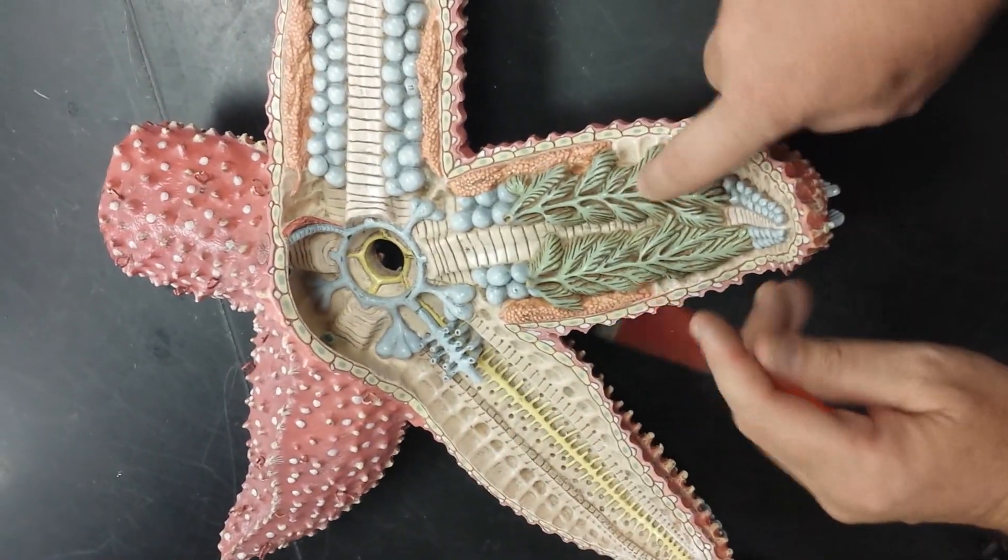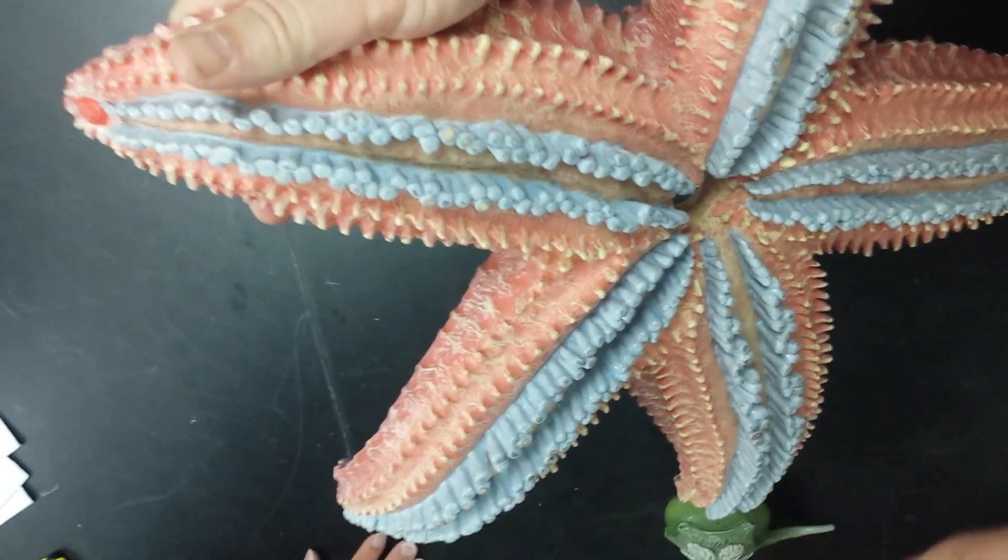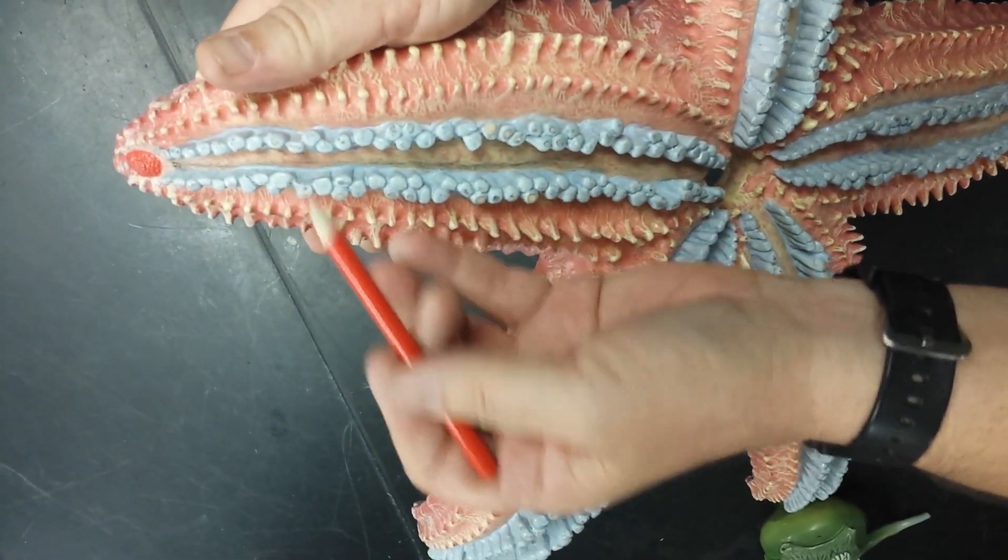Which one? This one? Yeah, these are pyloric caeca. And then, here we have, can you see it? Here we have an eye spot, ambulacral groove, and these are tube feet.